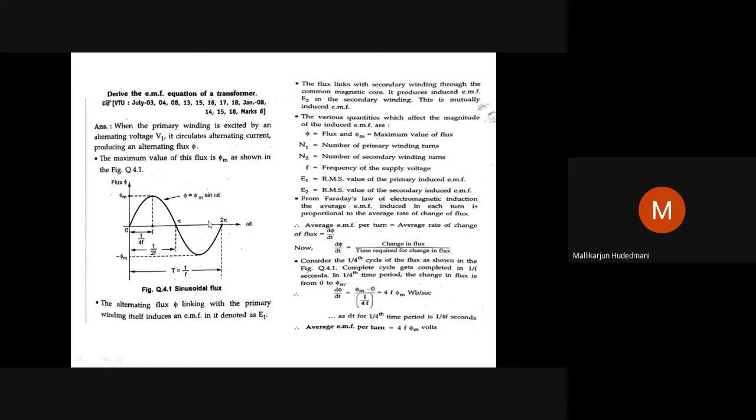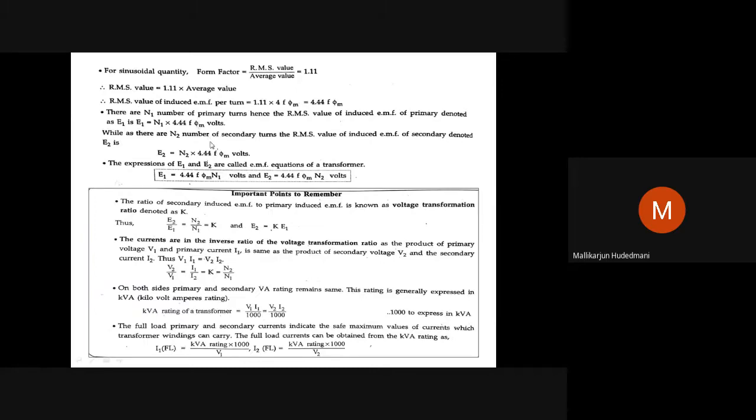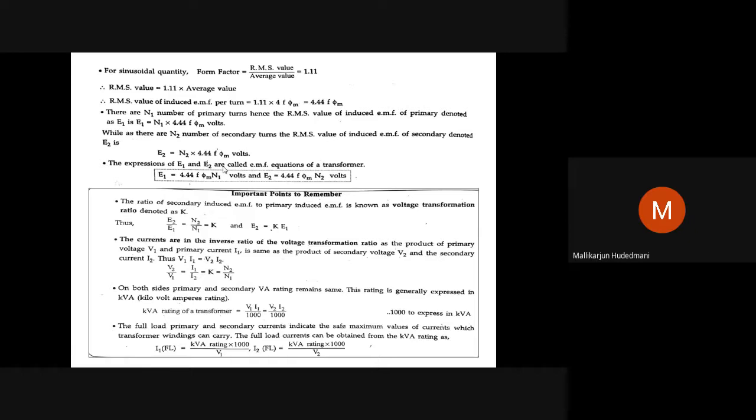Very simple. This equation: dΦ/dt equals Φm divided by 1 by 4F. This average to RMS shifting by 1.11. If there are N1 conductors in the primary, multiply by N1. If there are N2 conductors in the secondary, multiply by N2. That's the end of your derivation. Draw one waveform, write these parameters, take this equation, conclude N1 and N2 in the equation. E1 equals what, E2 equals what. Very simple. This is always a 4 to 5 mark question.